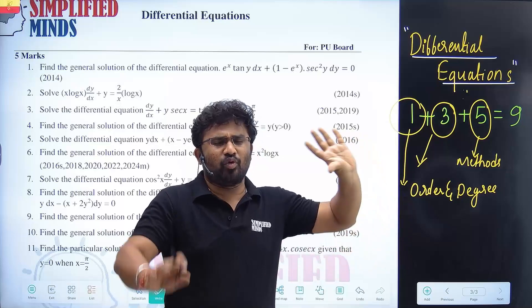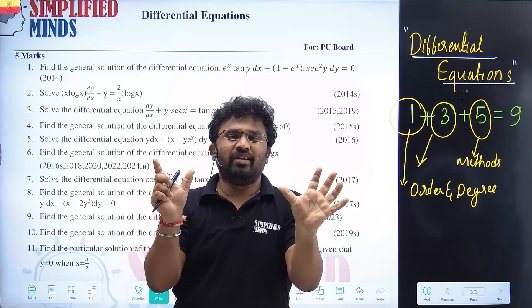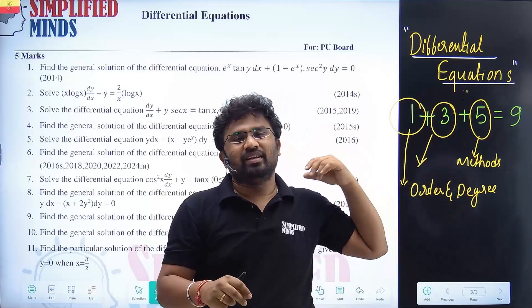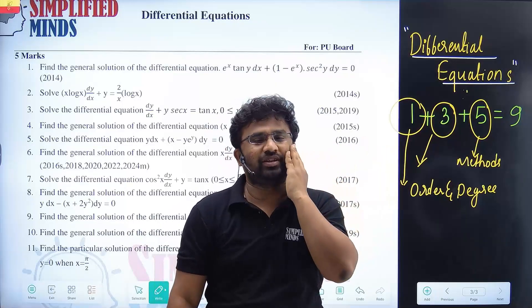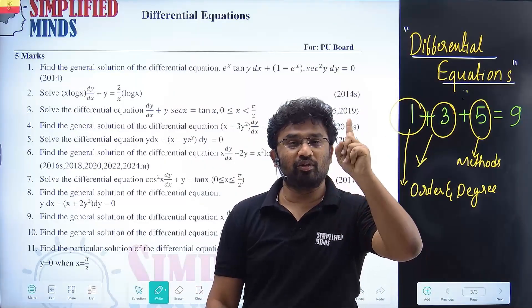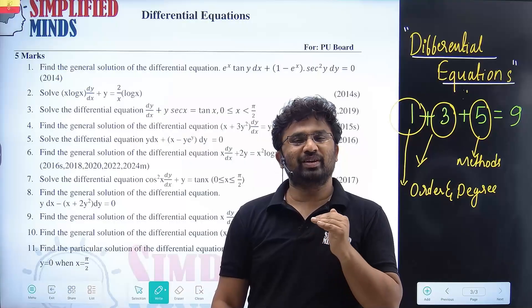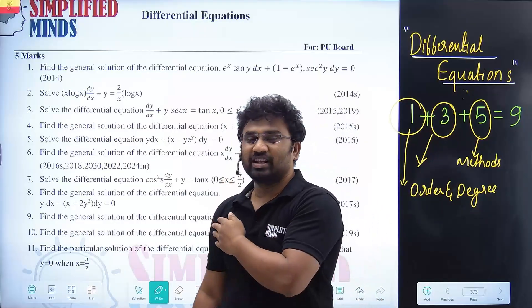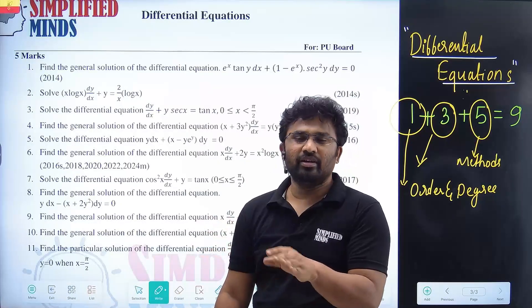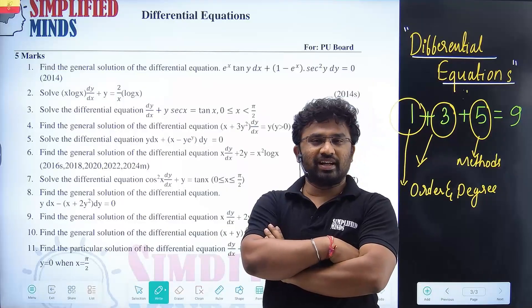In this chapter, the most important topics are order and degree, and the linear method — that is the major focus. You have to learn everything across all three methods. For three markers they may even ask homogeneous. With this preparation you can score nine out of nine in this chapter.